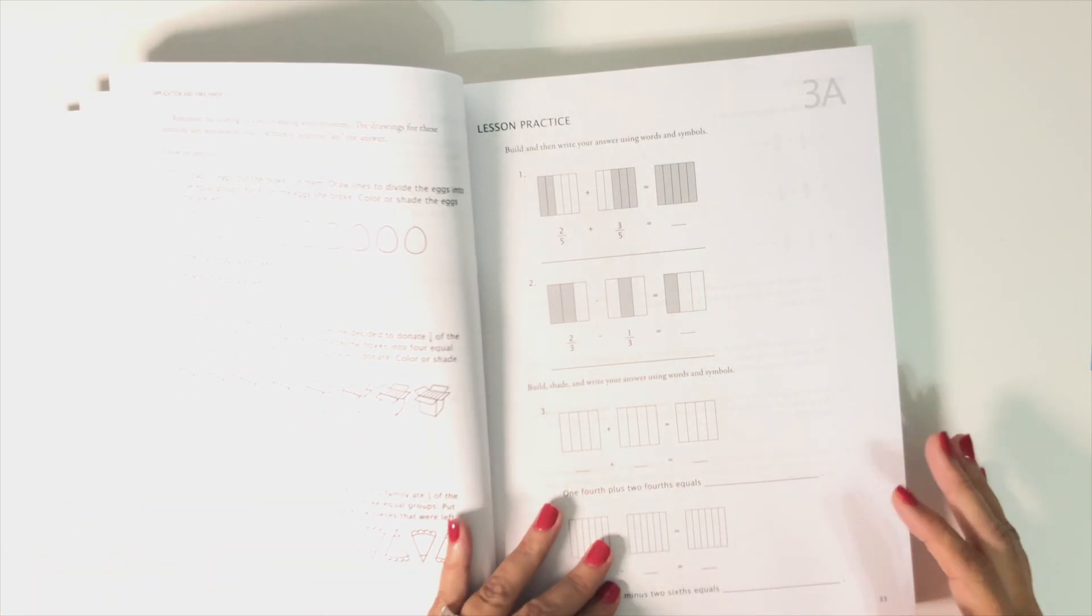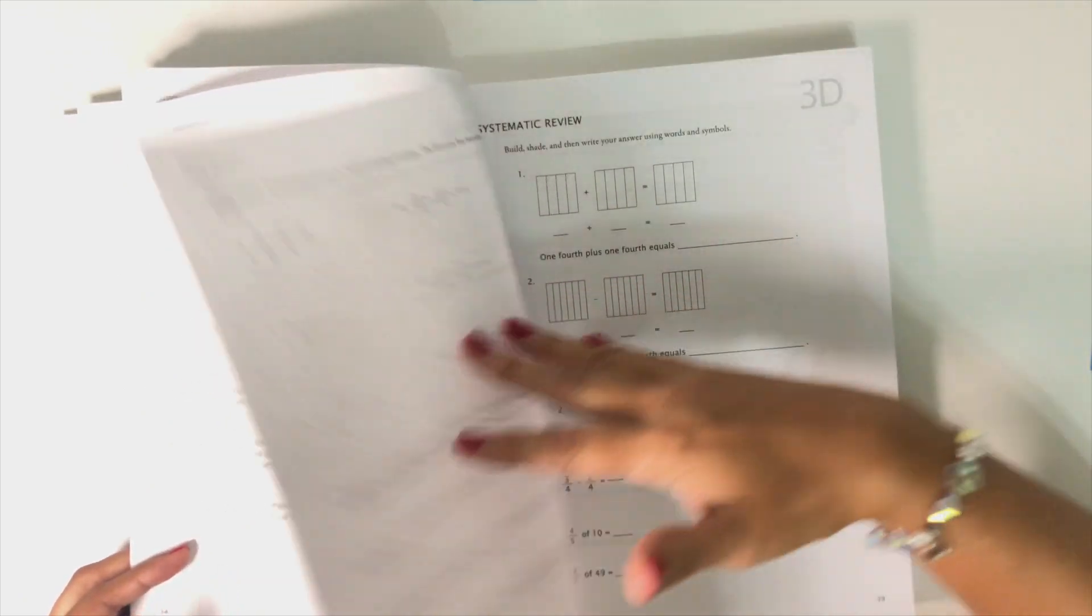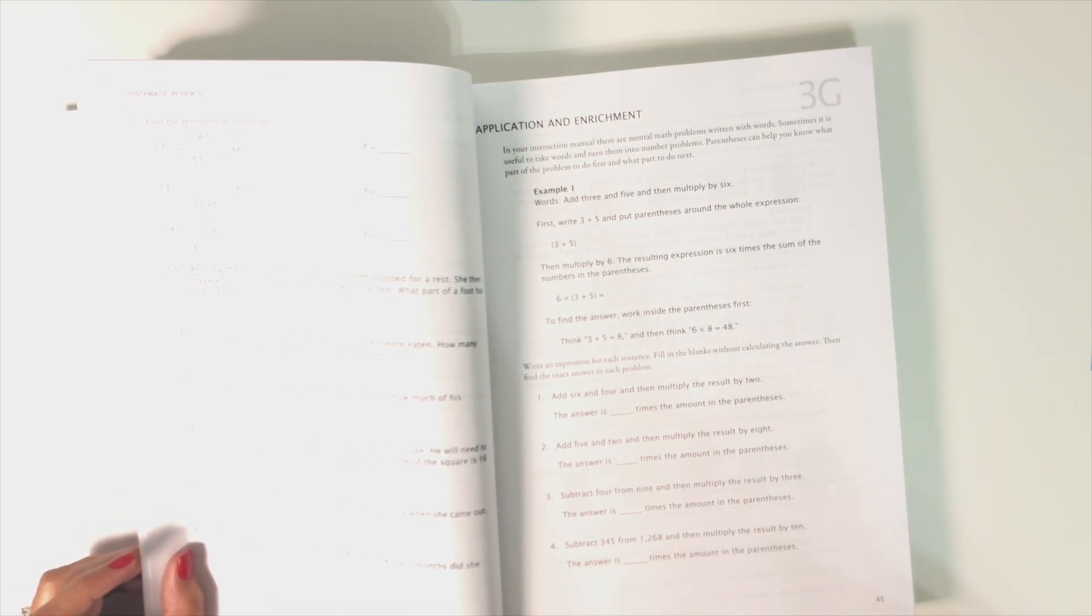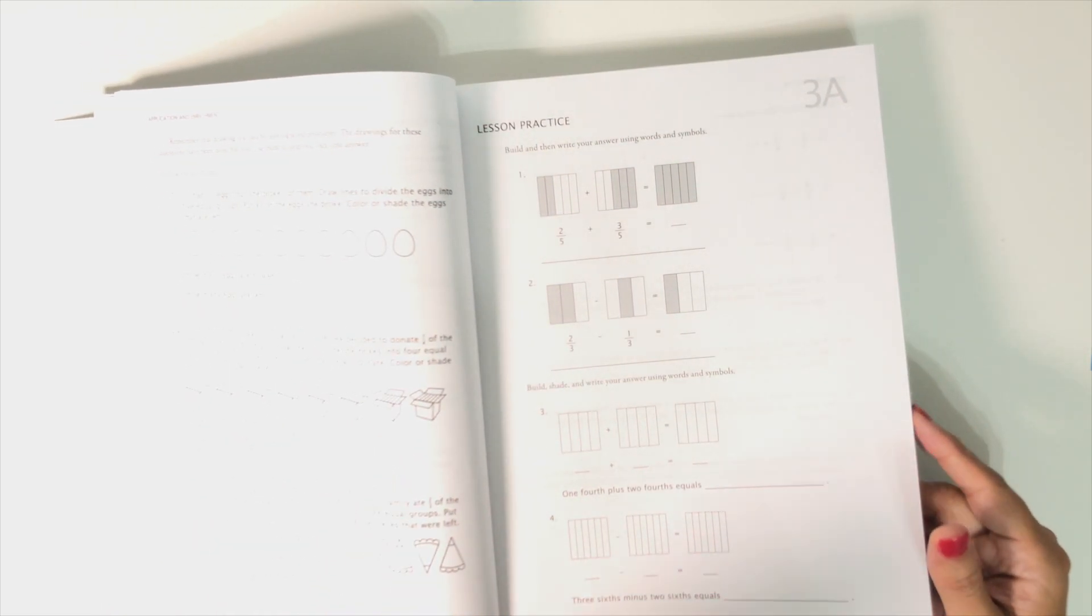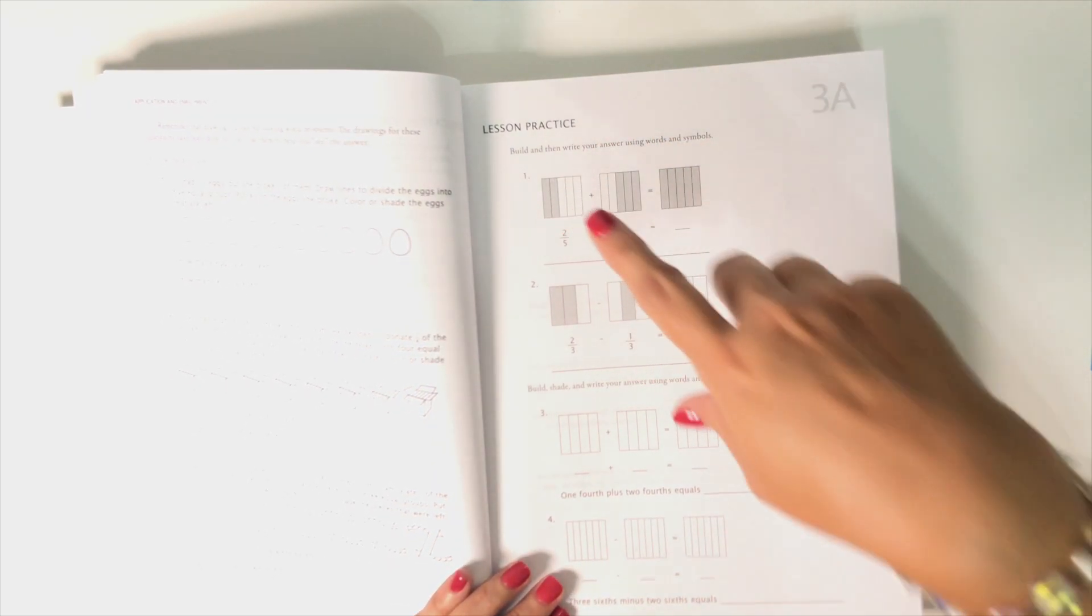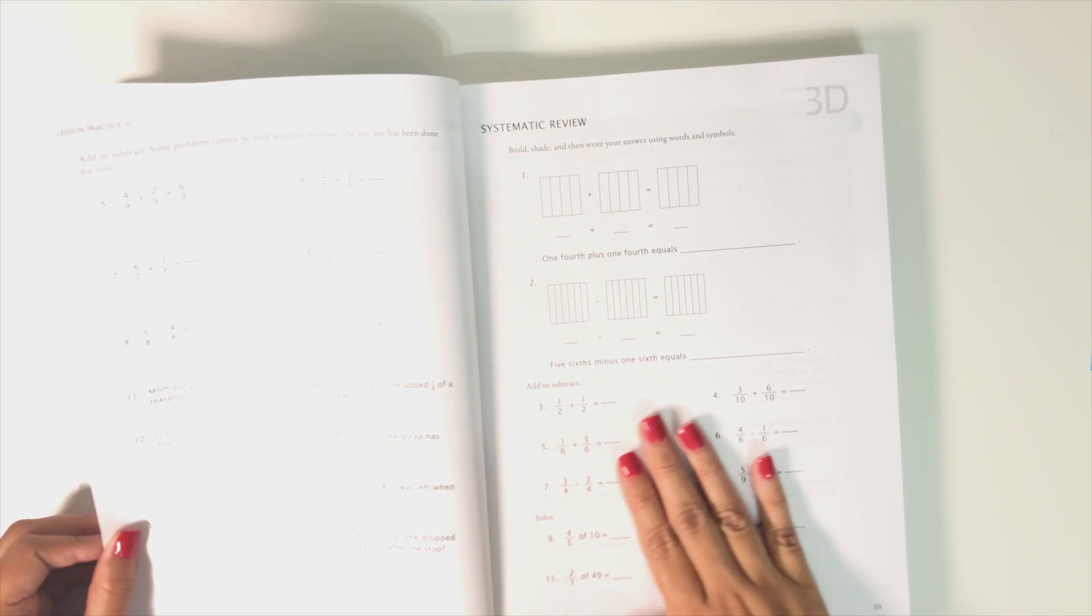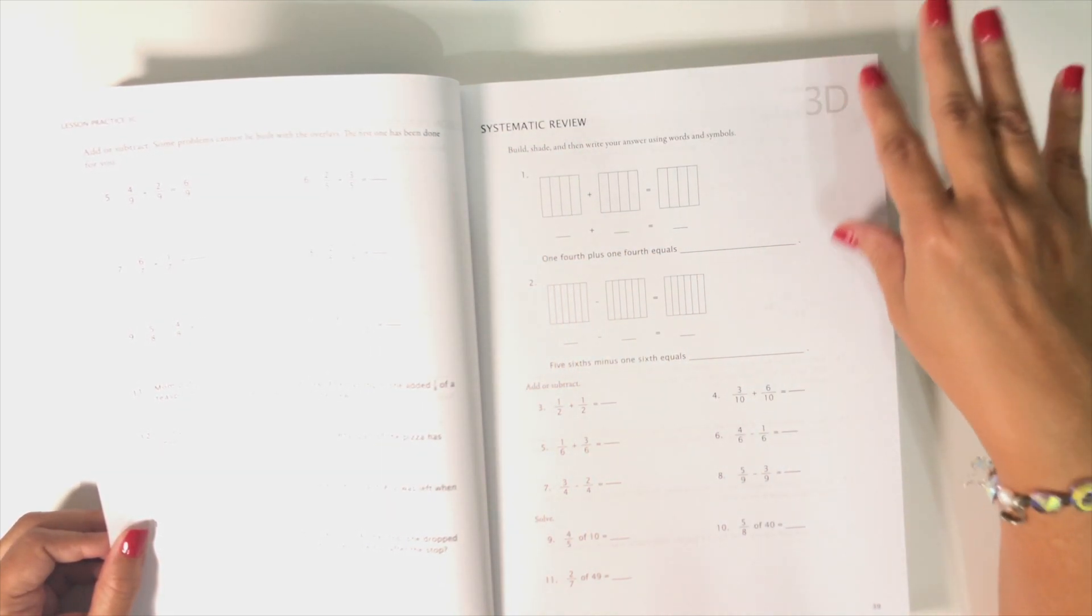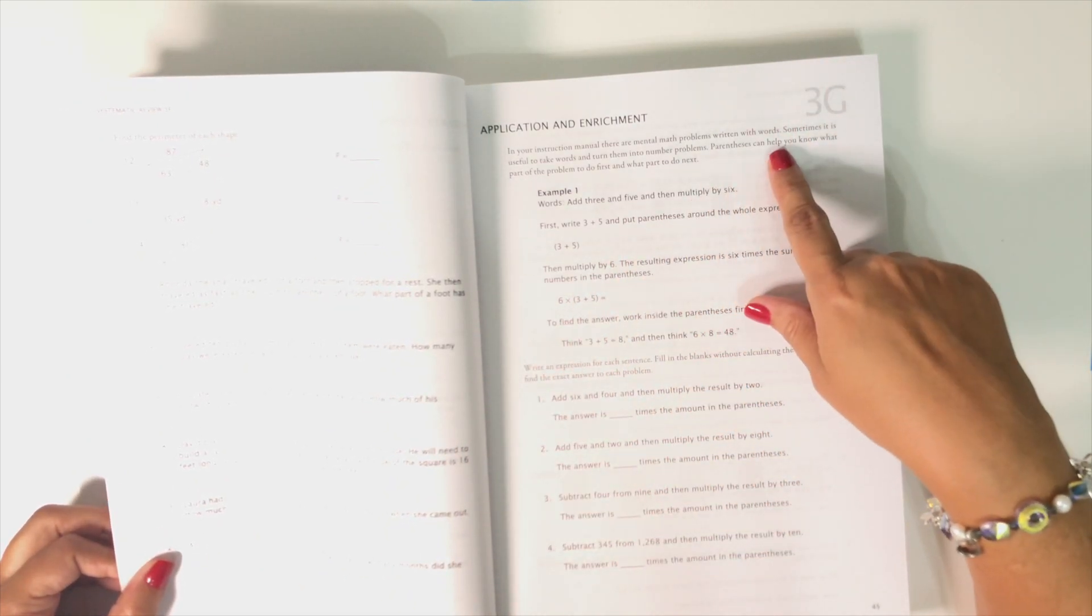The way these worksheets are structured is there's an A through G so you have worksheet A, B, C, D, E, F, G. For each lesson they are perforated so you can pull them out easily and just give your student the number of worksheets that you want. The first three worksheets A, B, C are lesson practice worksheets. And then the D, E, F are systematic reviews so you cover not just what's in this lesson but what they've learned in previous lessons and I really like that. And G is application and enrichment. I sometimes use these sometimes don't. I think they'd probably be really good for students who maybe just really love math and want more or are maybe gifted in math and want a little bit of an extra challenge.